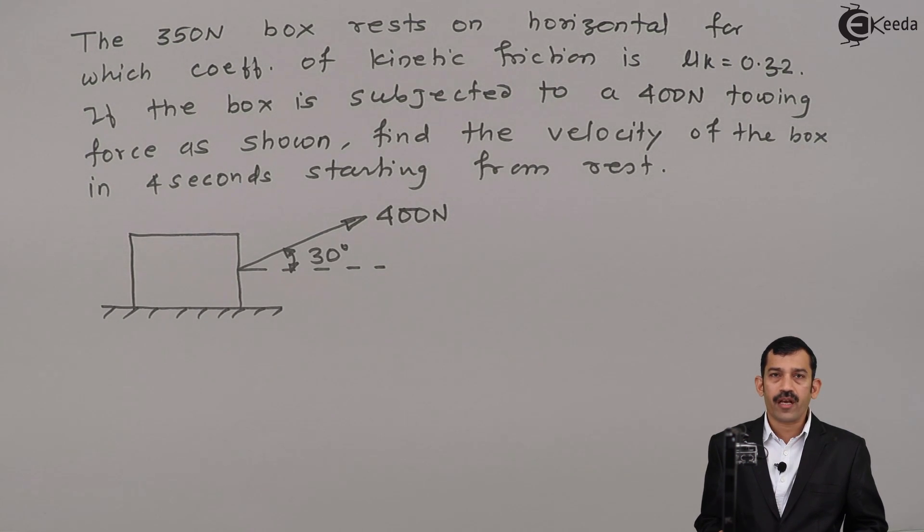We will find out acceleration of the box. Once we get acceleration of this box using equations of kinematics, we will find out its velocity. That means first step is what?